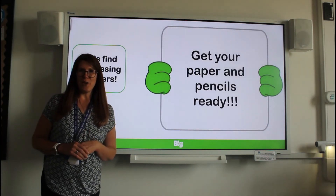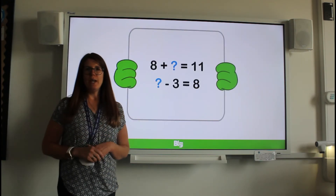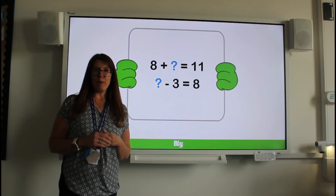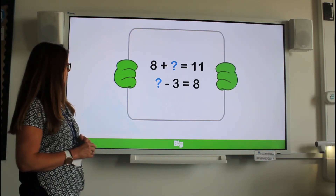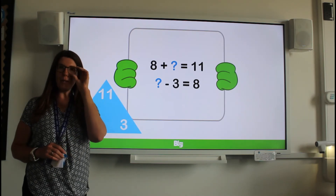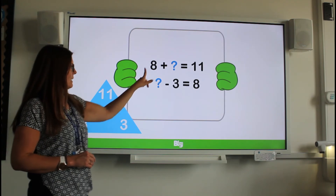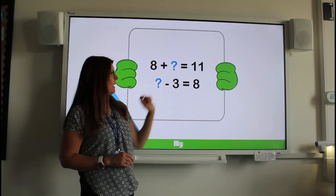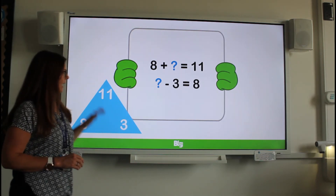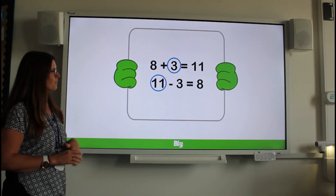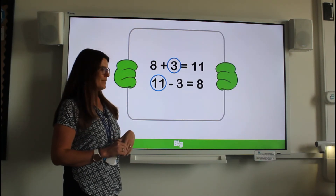Let's see if you can have a go by yourselves. Here we've got two different calculations but once again they are in the same fact family. Use your fact family triangle to help you find the missing number. We can see eight plus something equals 11, and something take away three equals eight. Did you get it right?